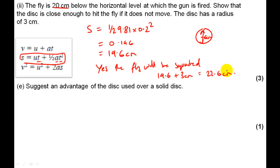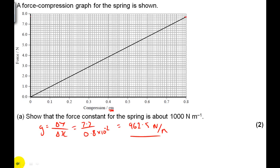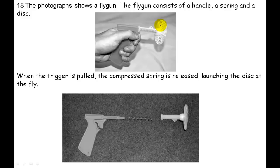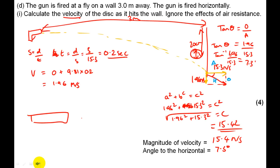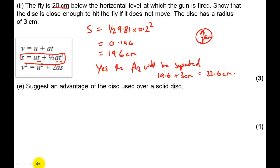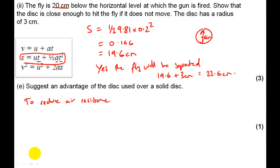The disc used has corrugations and cut-out holes to let air pass through, unlike a solid disc. This means it can move more quickly through the air without acting like a parachute. The advantage of this design over a solid disc is that it reduces air resistance. If you have any questions or comments please make them — I hope you found this video useful.